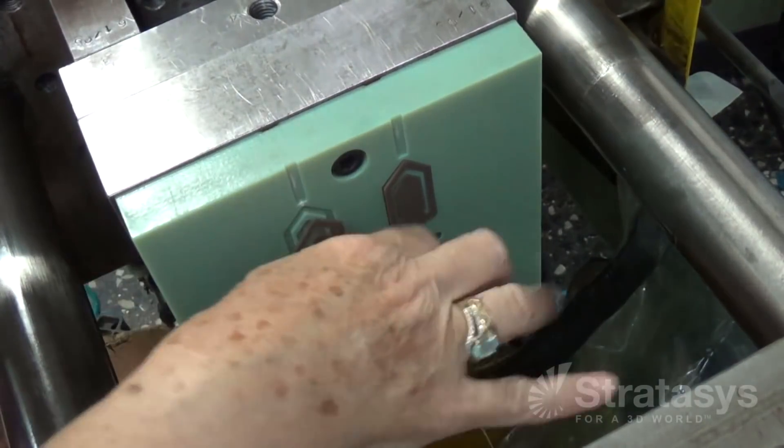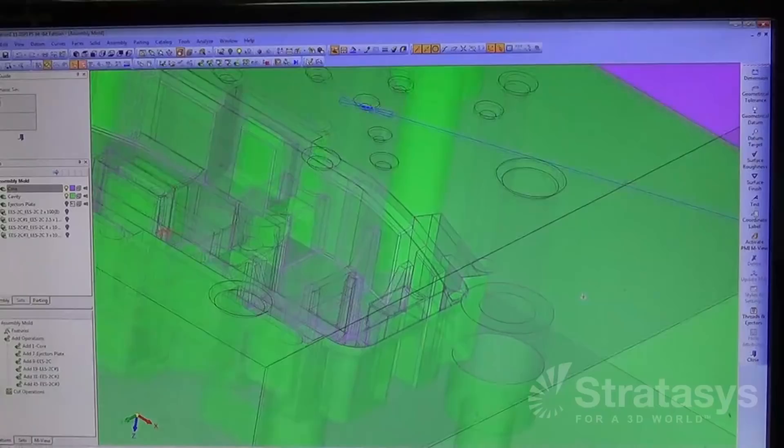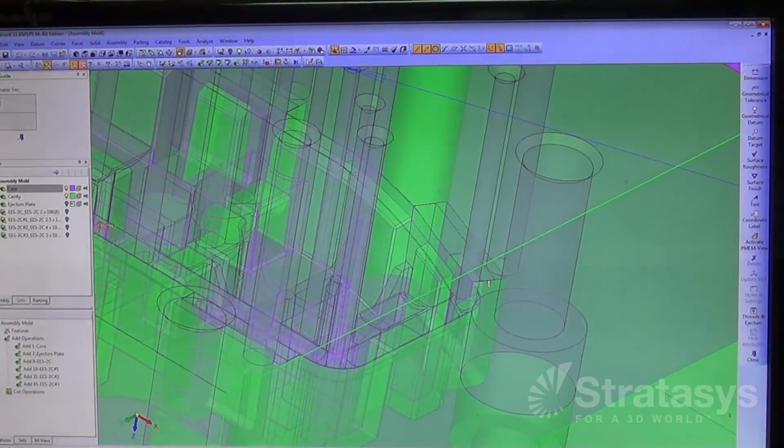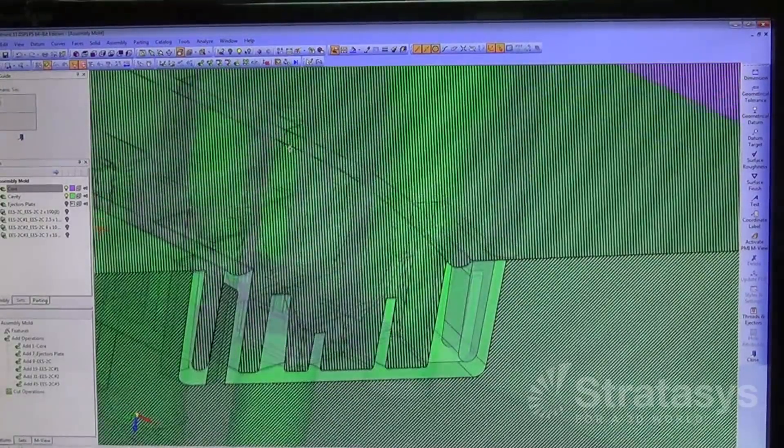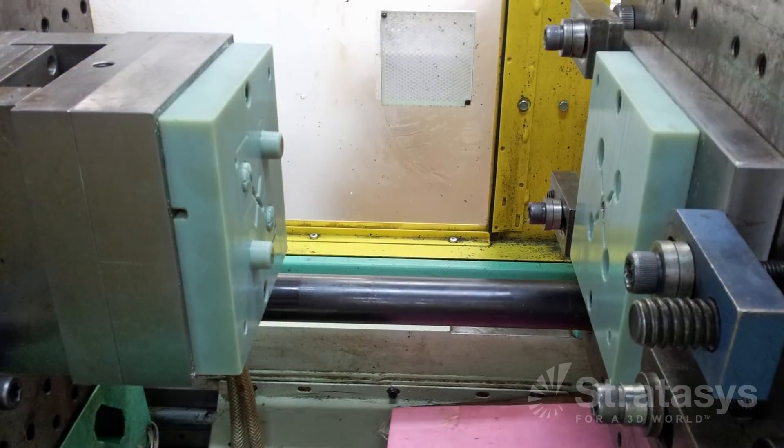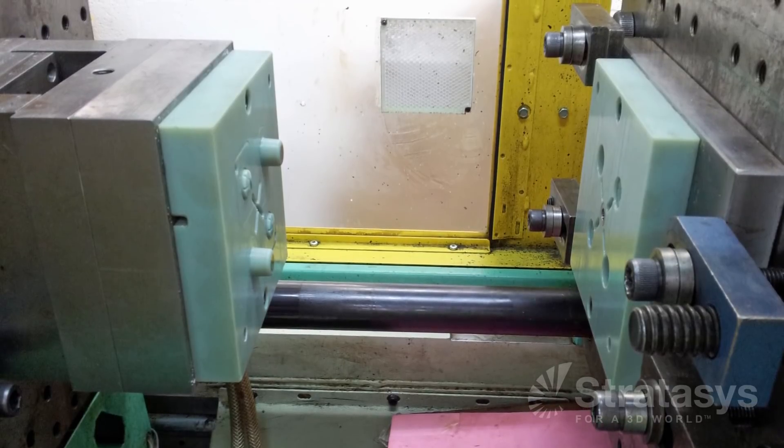Since plastic molds behave a bit differently than metal ones, a few modifications are needed. During mold design, minor adjustments are made to draft angles and shutoffs, for example. Next, the core and cavity are printed on a PolyJet 3D printer.